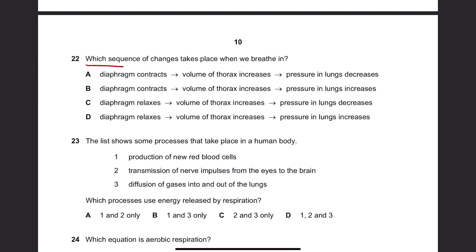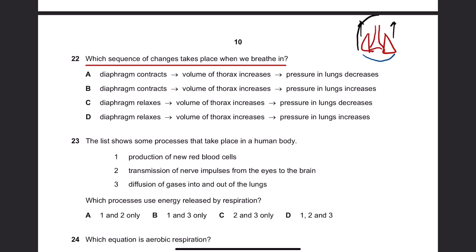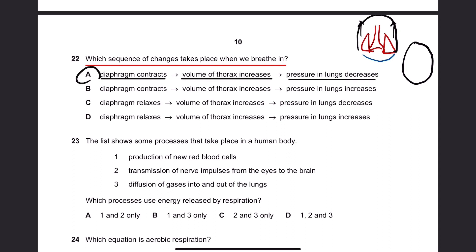Number 22. Which sequence of changes takes place when we breathe in? When we breathe in, the diaphragm contracts and moves downwards. The ribcage moves upwards and outwards. This increases the volume of the thorax. When space increases, pressure decreases. So: diaphragm contracts → volume of thorax increases → pressure in lungs decreases. A is the correct answer.